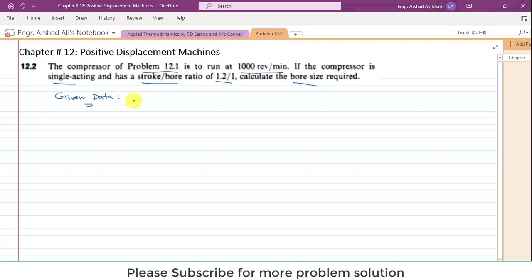Given data: the compressor speed n is equal to 1000 rpm. Also, the compressor is single acting.